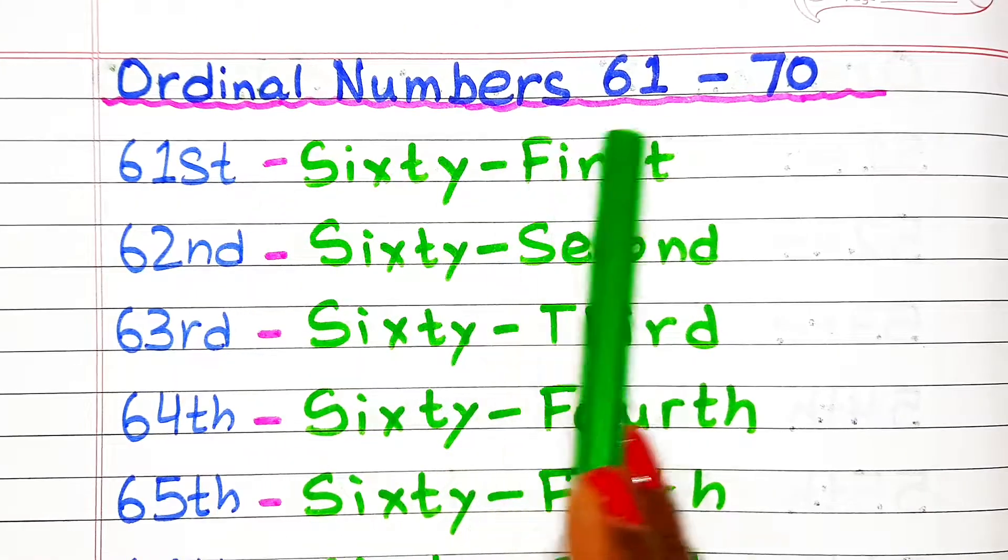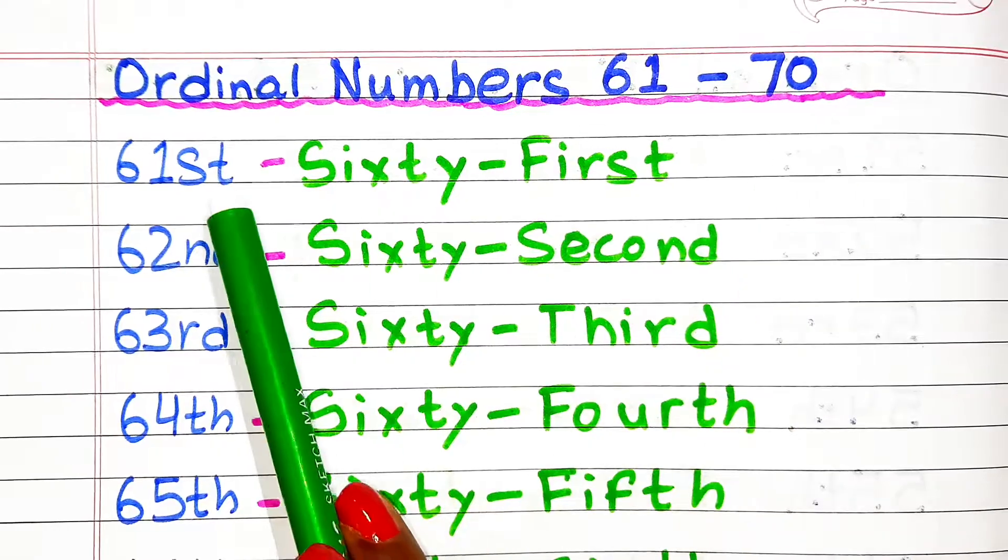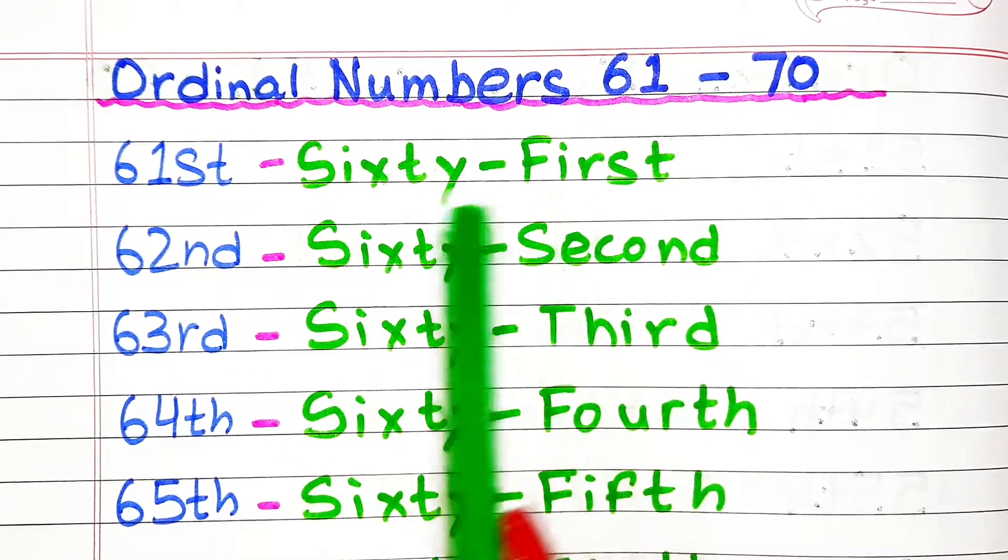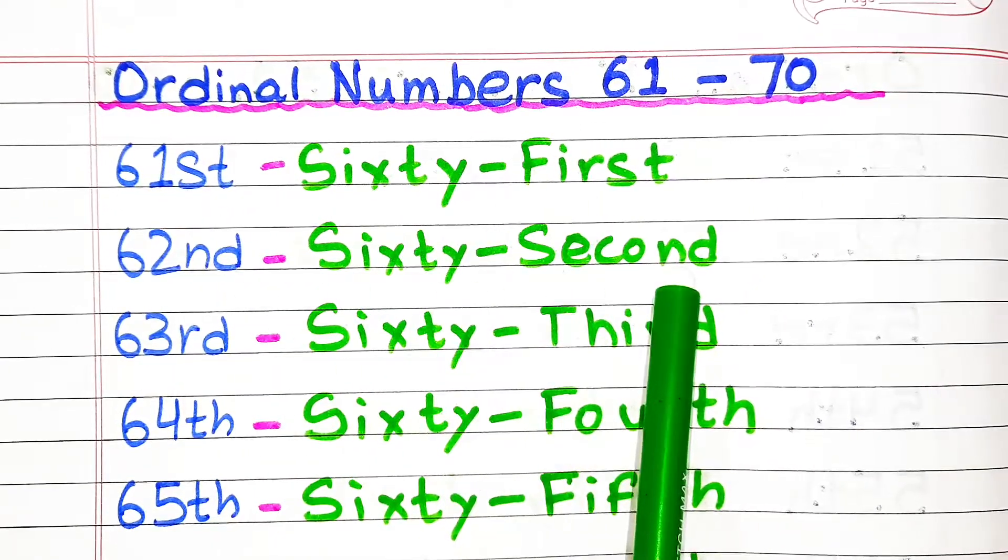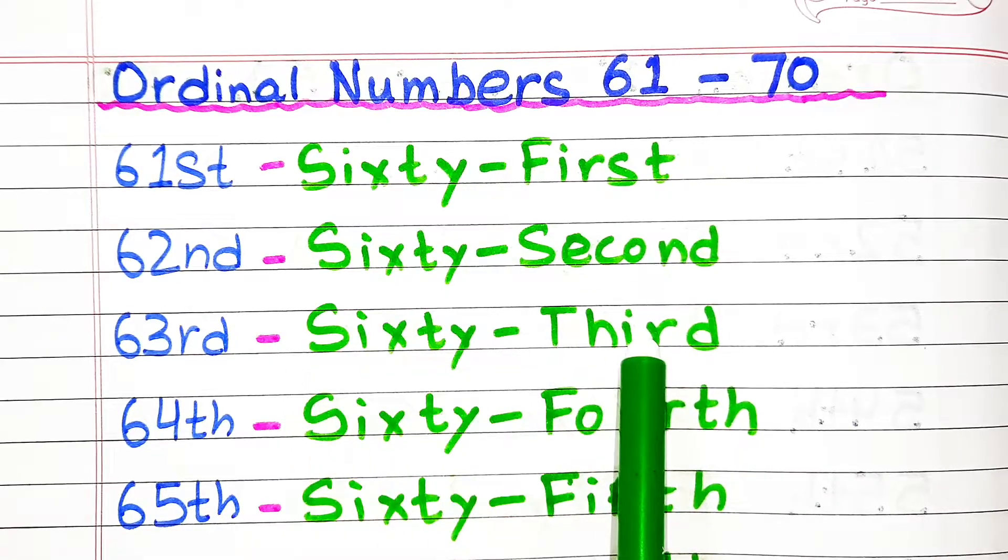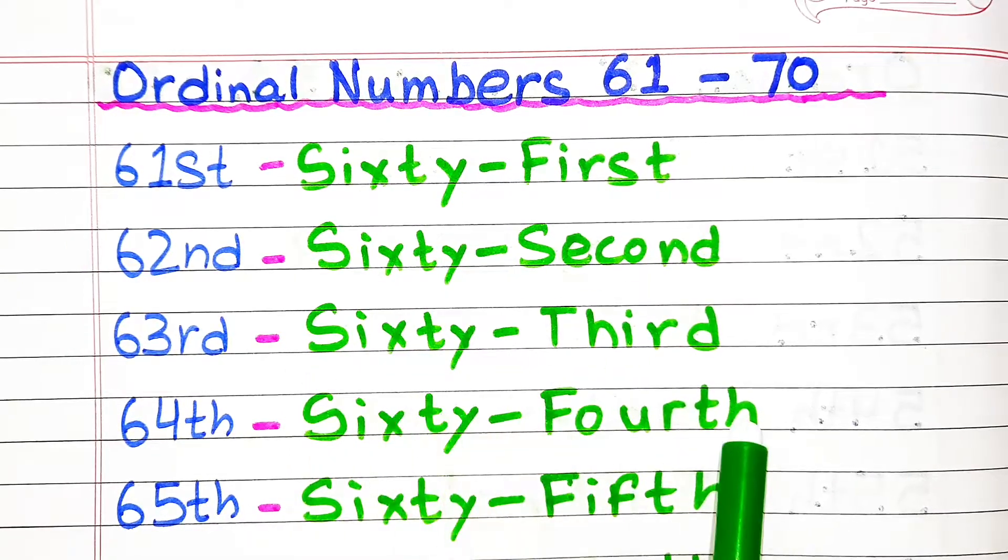Ordinal numbers from 61 to 70. Sixty-first, sixty-second, sixty-third, sixty-fourth.